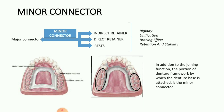Moving on to the next component — the minor connector. The main function of the minor connector is to connect the major connector to all the other components, that is the direct retainer, indirect retainer, and rest. This provides rigidity, unification, bracing or stabilization of the cast partial denture, and also helps in the retention of the prosthesis. In addition to its joining function, the portion of the denture framework by which the denture base is attached also acts as a minor connector.